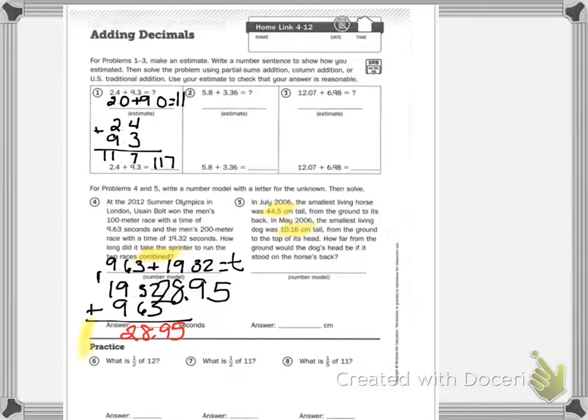Your practice at the bottom. It says, what is one half of 12? You can either write your problem like this, 12 over 2, which also means 12 divided by 2, and our answer is 6. Then you have, what is one half of 11? And what is one fifth of 11?